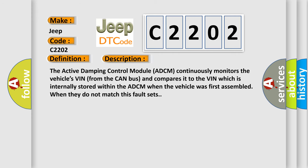The Active Damping Control Module ADCM continuously monitors the vehicle's VIN from the CAN bus and compares it to the VIN which is internally stored within the ADCM when the vehicle was first assembled. When they do not match, this fault sets.